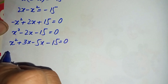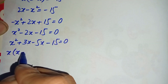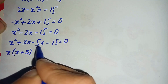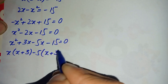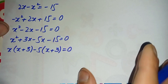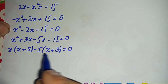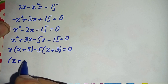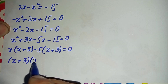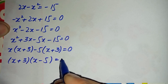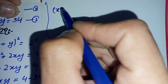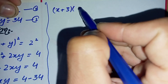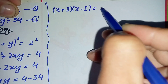From the first two terms we take x common: x(x + 3), and from the last two terms we take minus 5 common: minus 5(x + 3). So factoring out (x + 3), we get (x + 3)(x minus 5) is equal to 0.